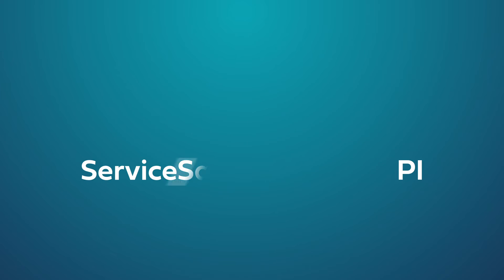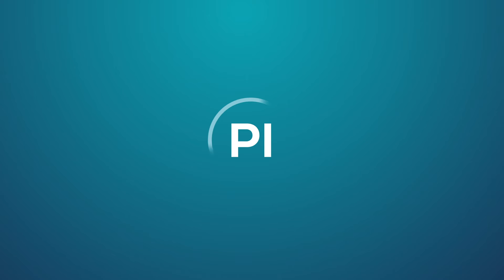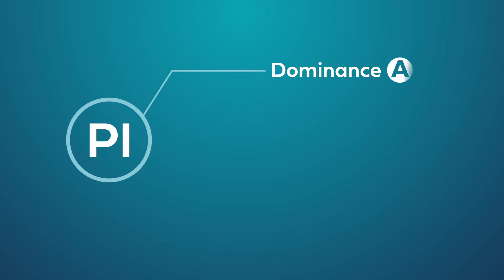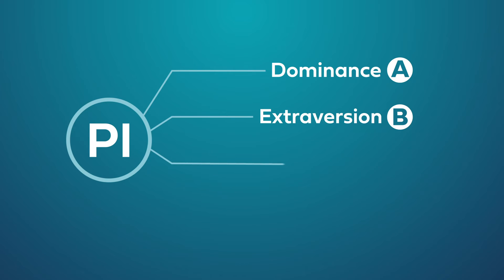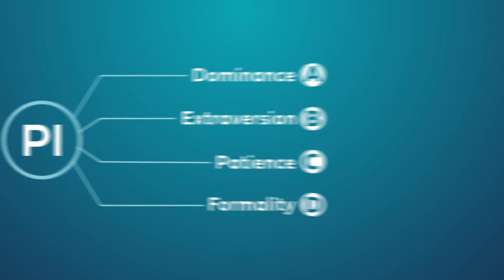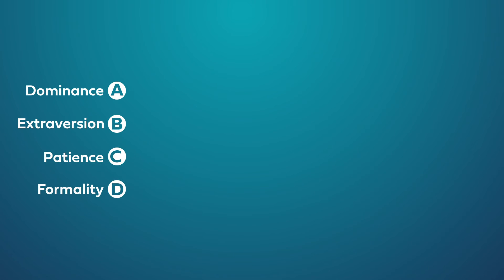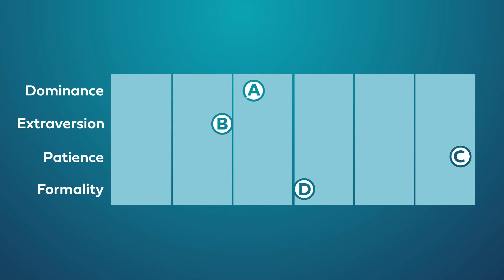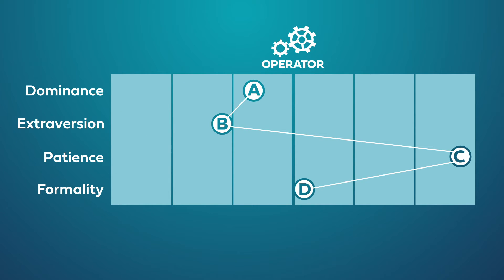To begin, it's important to review the four behavioral traits that are analyzed after taking the PI. These four traits include dominance, extroversion, patience, and formality. Upon completion of the assessment, your results for each drive will be translated into a unique behavioral pattern that centers around a midpoint with three sigmas on each side.